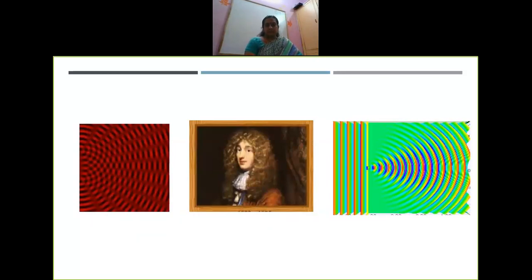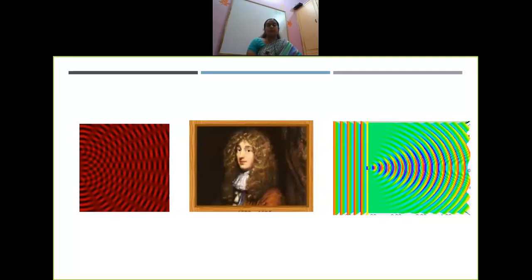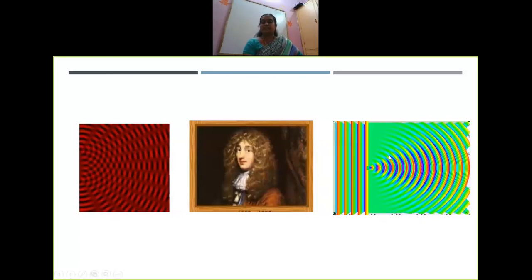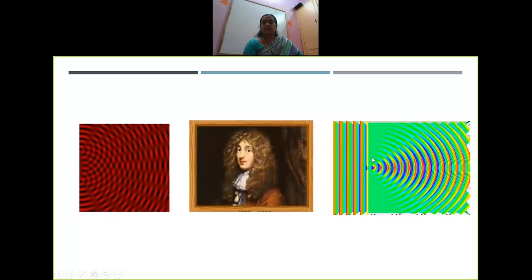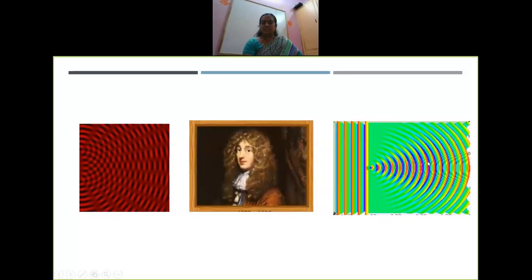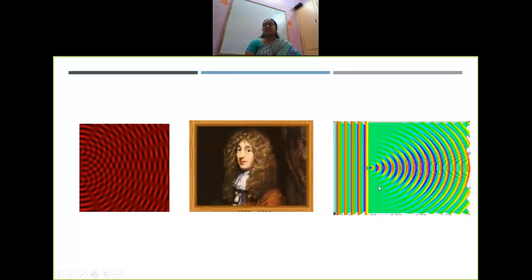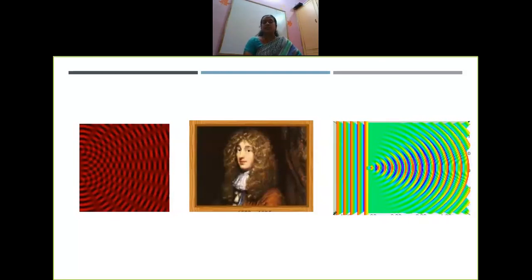Now here came the scientist Huygens, who said light travels in the form of waves. Many phenomena such as interference support this — the scientist Young proved the interference phenomenon and said that light travels in the form of waves. Now here is the phenomenon of diffraction, where light is allowed to pass through a small slit. When it comes out, you can see some fringes — light bends at this point, and bending of light is called diffraction. All these concepts you will learn in higher classes, but just to make you understand that light travels in the form of waves, I showed you these pictures.